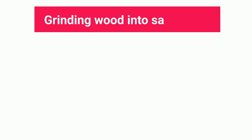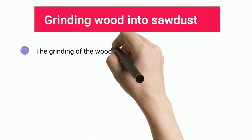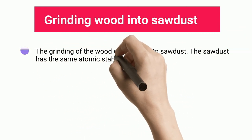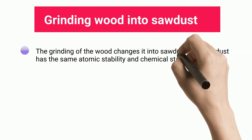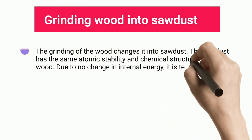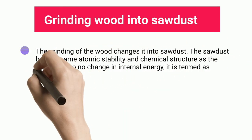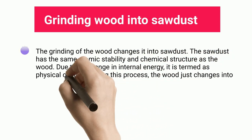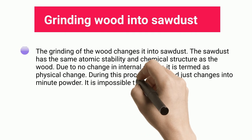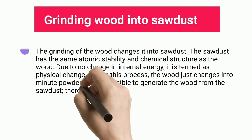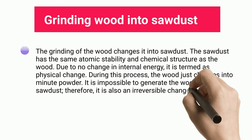Grinding Wood Into Sawdust. The grinding of wood changes it into sawdust. The sawdust has the same atomic stability and chemical structure as the wood. Due to no change in internal energy, it is termed a physical change. During this process, the wood just changes into minute powder. It is impossible to generate the wood from the sawdust; therefore, it is also an irreversible change.